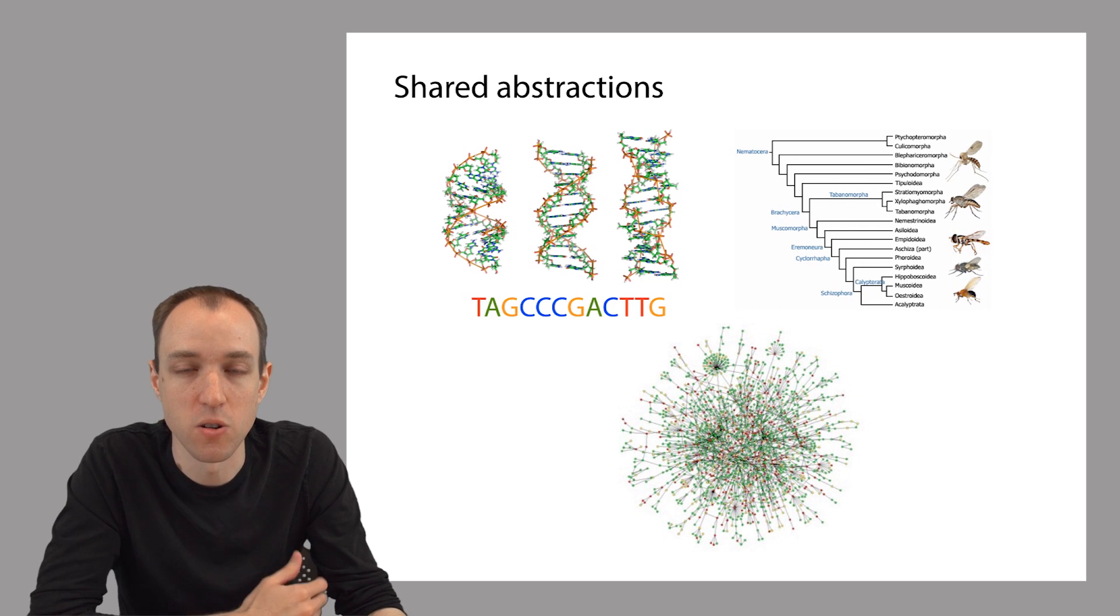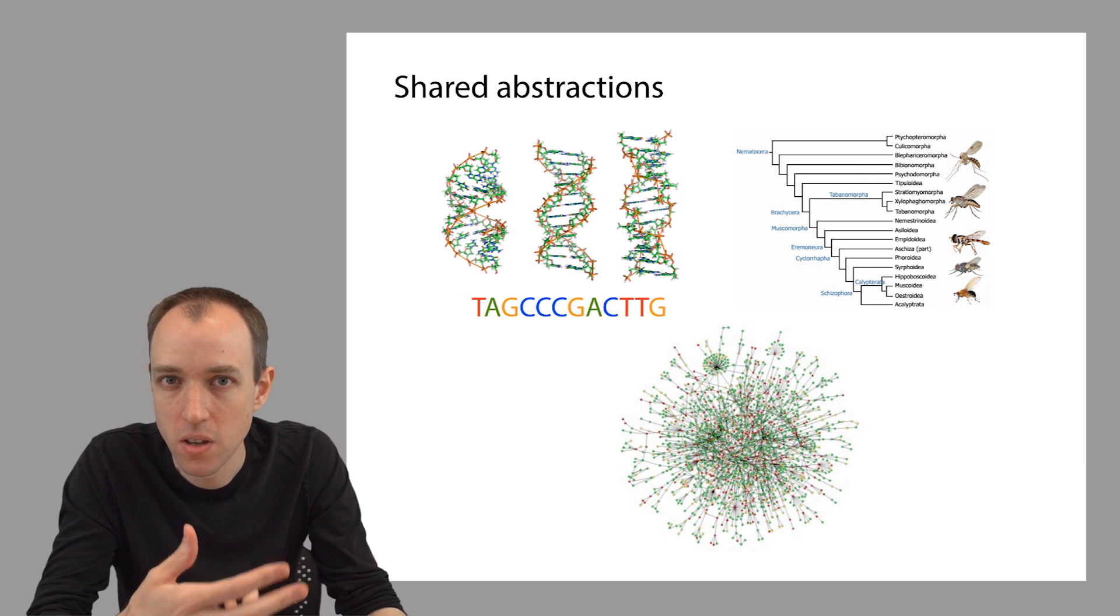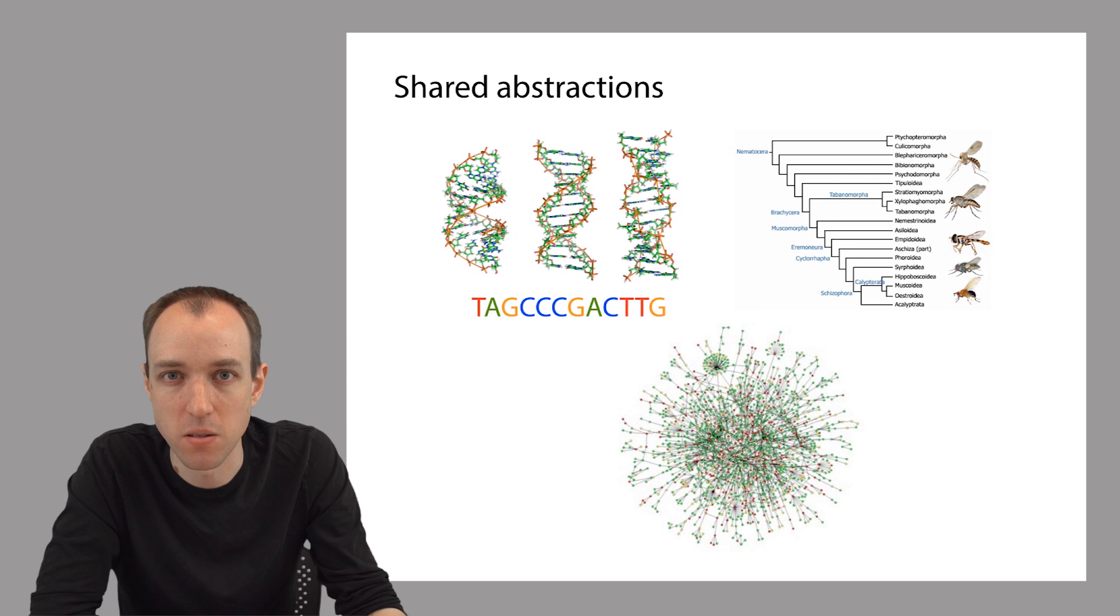And computer scientists, of course, think in terms of trees all the time, right? Trees as data structures, but then also trees that describe the progress of algorithms through a space of possible solutions.